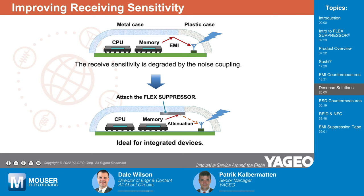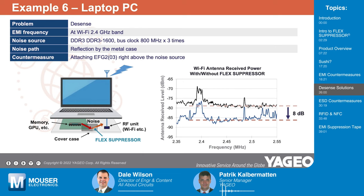Here is an example with a laptop PC — no longer about EMI regulation, but really about protecting signal integrity. We are in the range of Wi-Fi 2.4 GHz, and we have noise being originated by the memory, the bus clock, different noise aggressors, amplified by the reflection of the metal case. By attaching the EFG flex suppressor, you are going to stop the propagation of that noise and therefore protect the RF unit of the Wi-Fi. Do you have models that design engineers can put into field simulators to determine placement and thickness? In fact, it's a lot of try-and-retry testing. There is no perfect formula — it's a lot of playing around to find the optimal way.